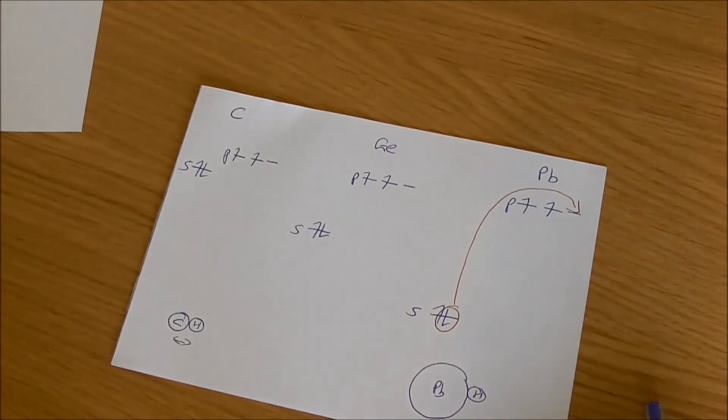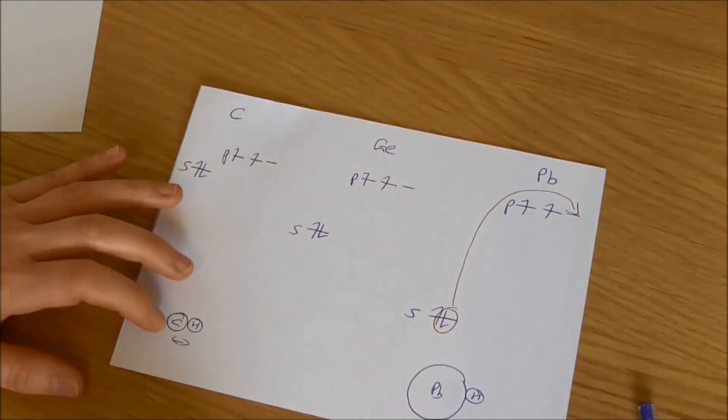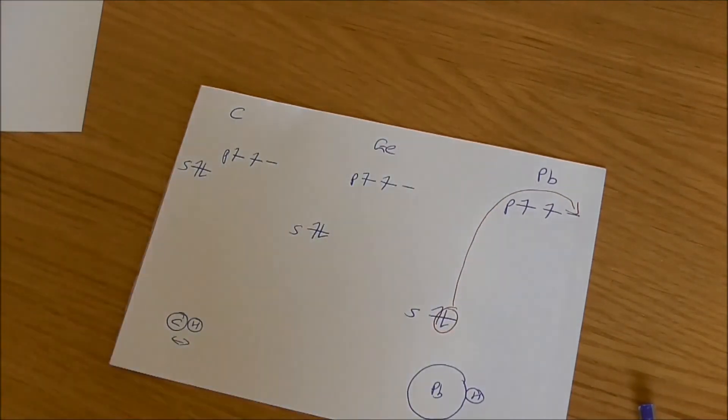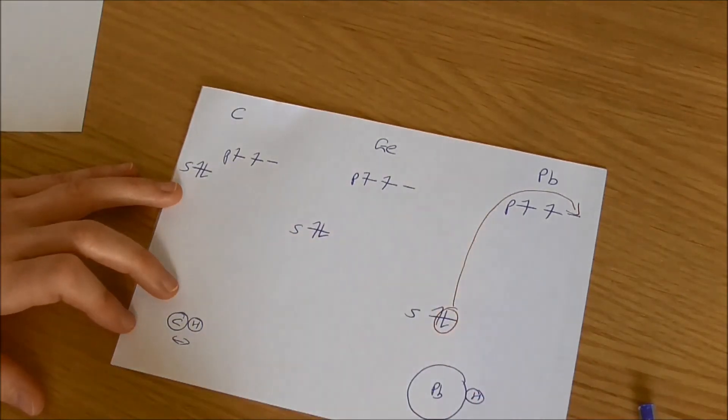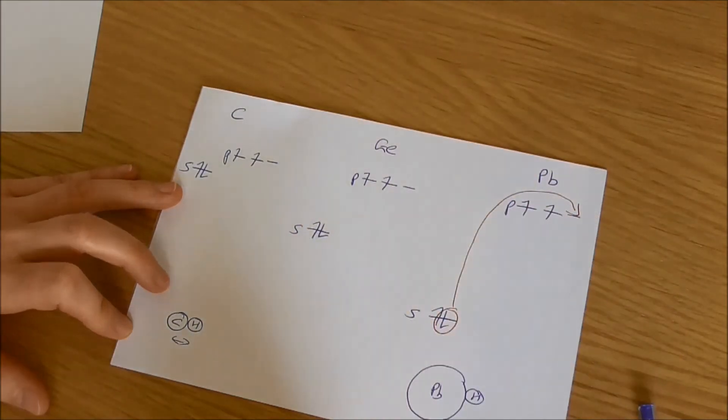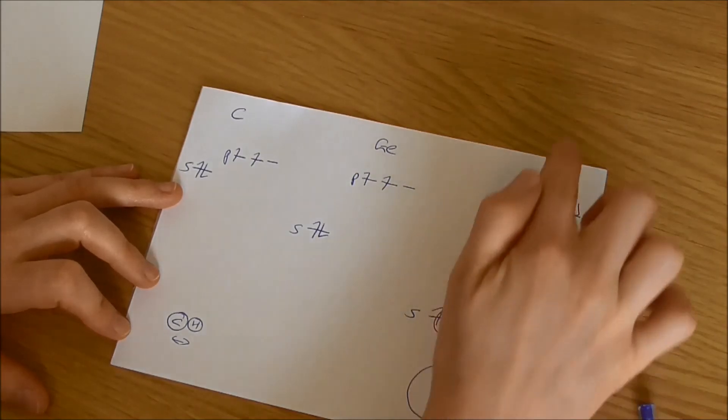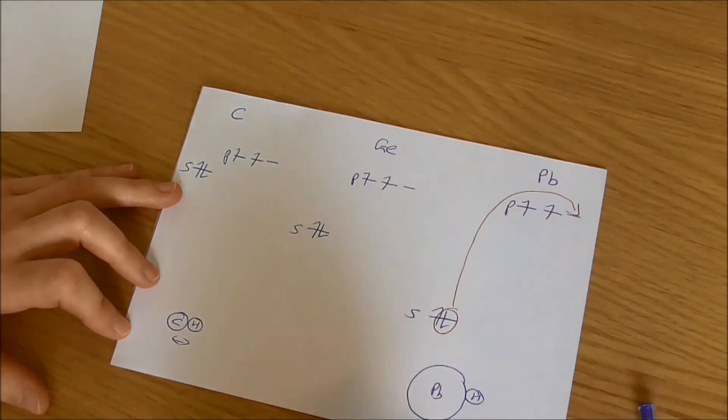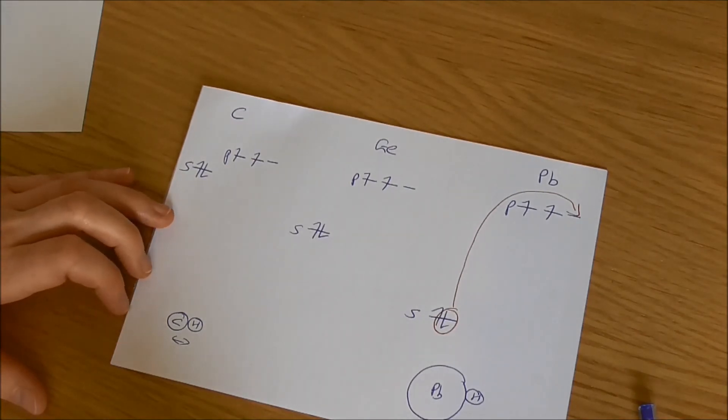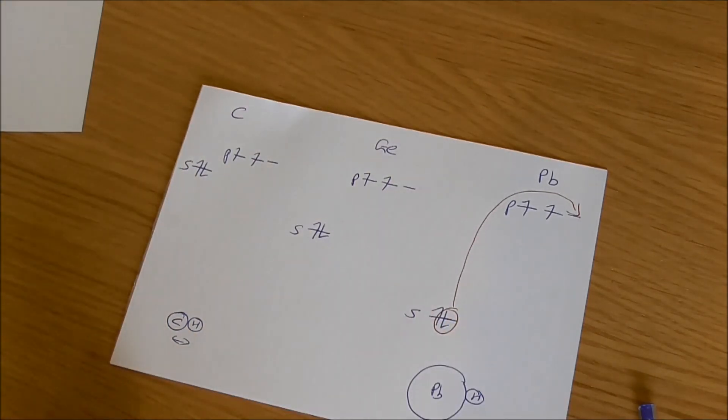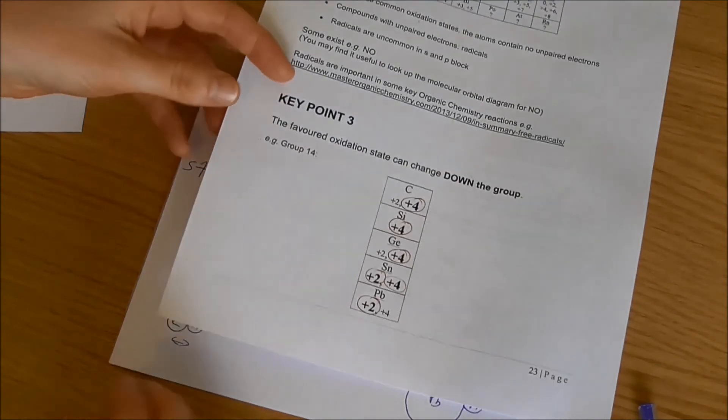So what you find with lead, lead tends to just leave these s electrons where they are and say I'm not going to bother, I'm just going to leave those s electrons alone, just do bonding with my p orbitals, with my electrons in my p orbitals. Obviously if lead only uses those two p orbital electrons in bonding it's only going to have a plus 2 oxidation state and this is what we see.